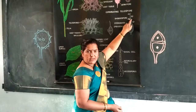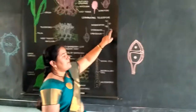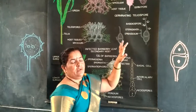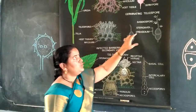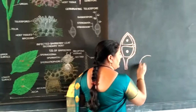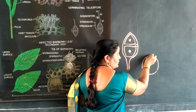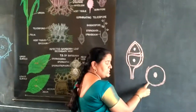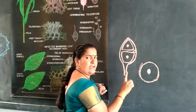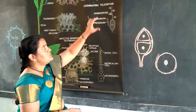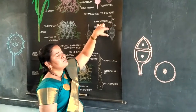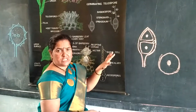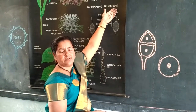On this promycelium, basidiospores are developed. These basidiospores are spherical, unicellular, uninucleate, and haploid spores. This is the basidial stage. Each promycelium produces four basidiospores. Out of these, two are with positive strain and two are with negative strain. This is the basidial stage developed in the soil.